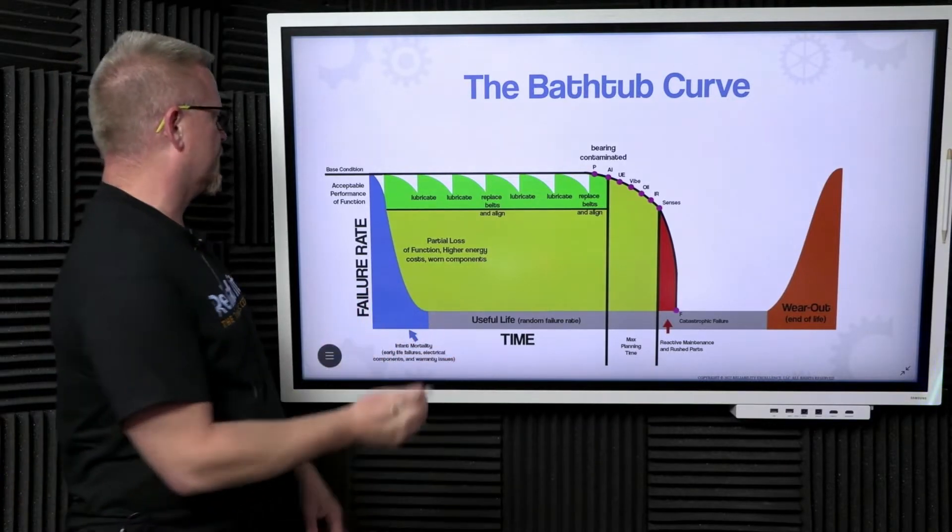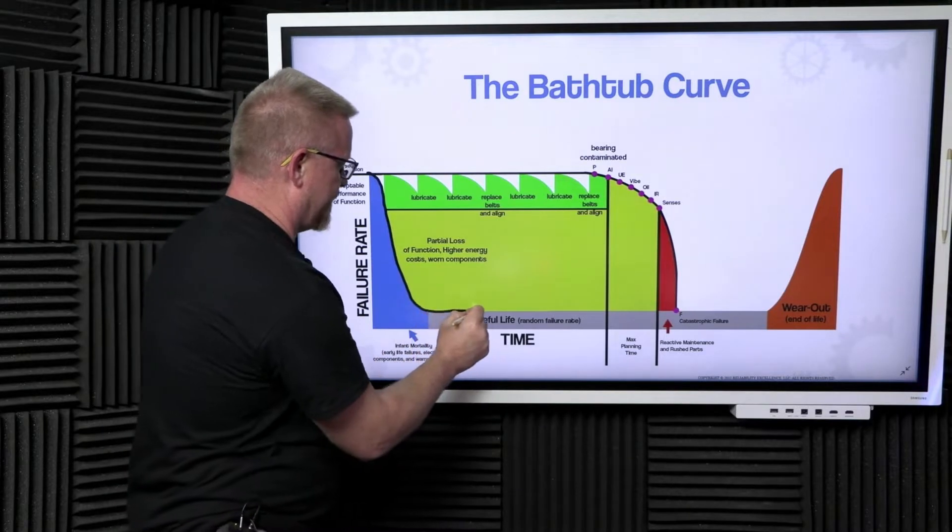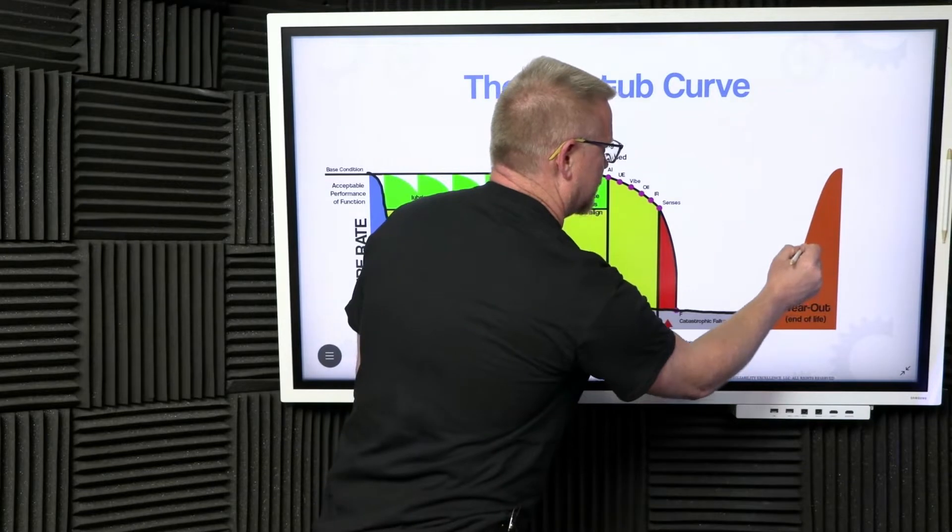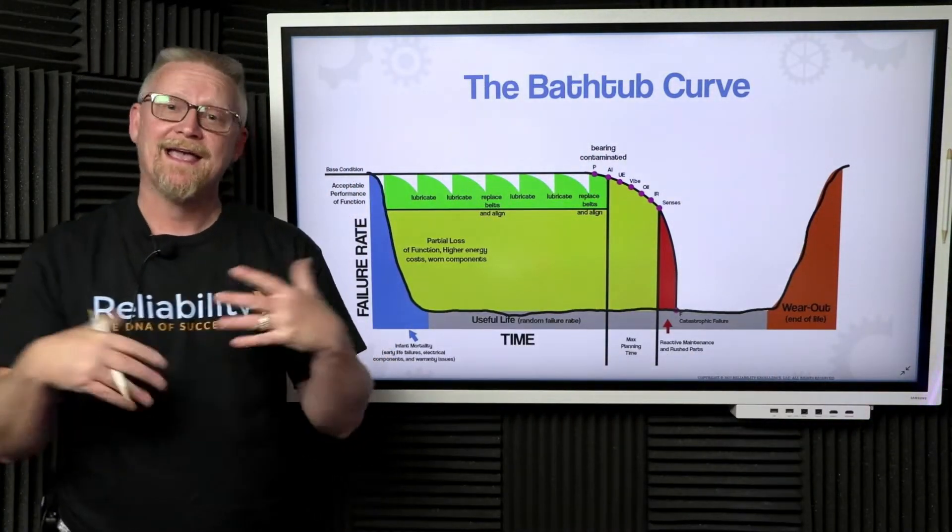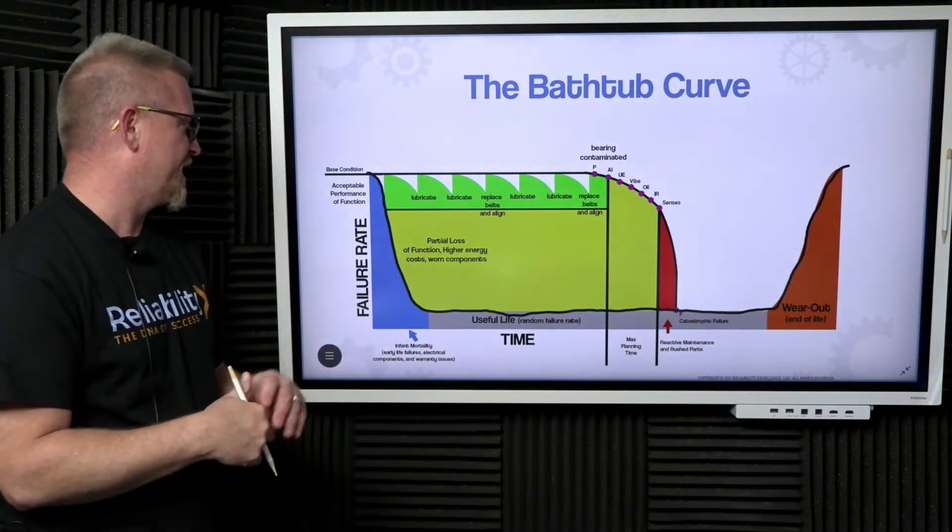If you're unfamiliar with the bathtub curve, it is this line right here that I am going to desperately try to draw relatively well, which I didn't do such a great job. Anyway, it's broken up into a couple of sections when you combine all the various failure mechanisms.